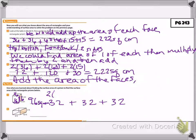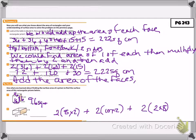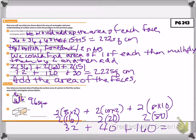On the next one, we have the front which is 2 times 8 times 2, plus 2 times 10 times 2, plus 2 times the top and bottom which is 8 by 10. So we have 16 times 2 is 32, 20 times 2 is 40, and 80 times 2 is 160. When I add those up I get 232 square feet.